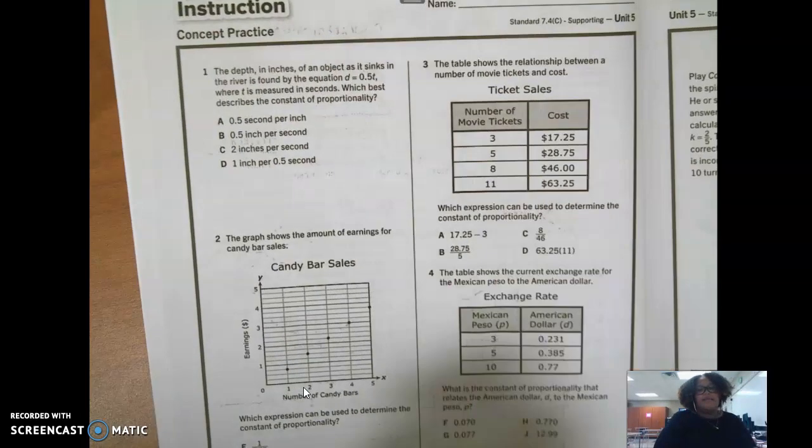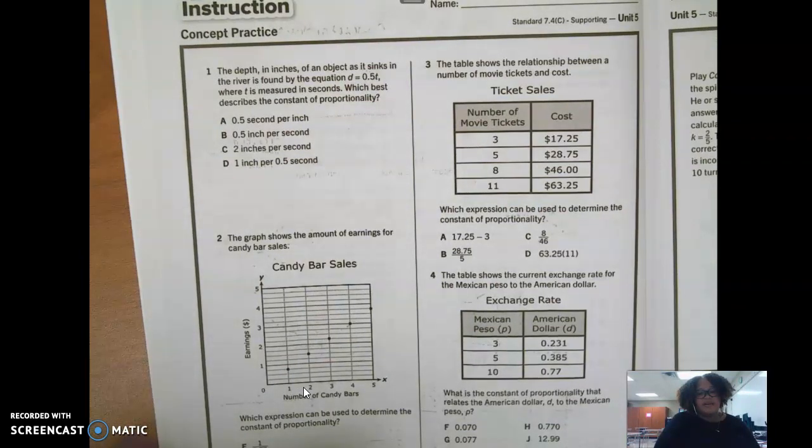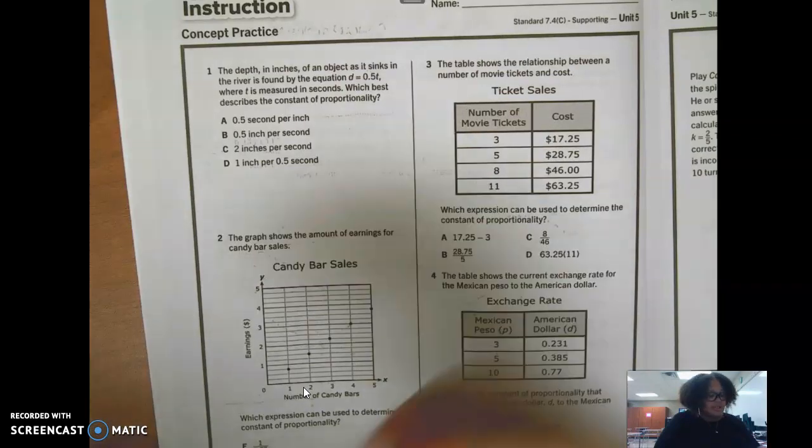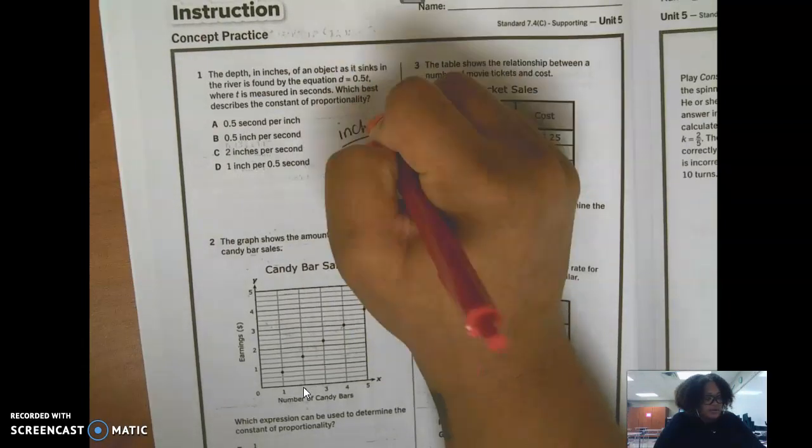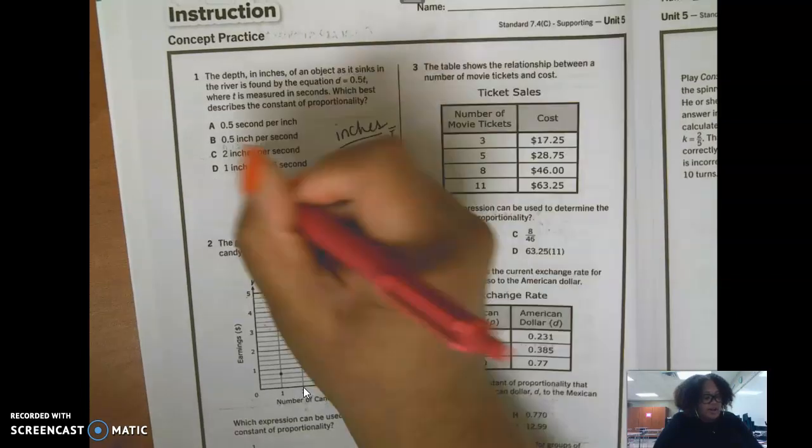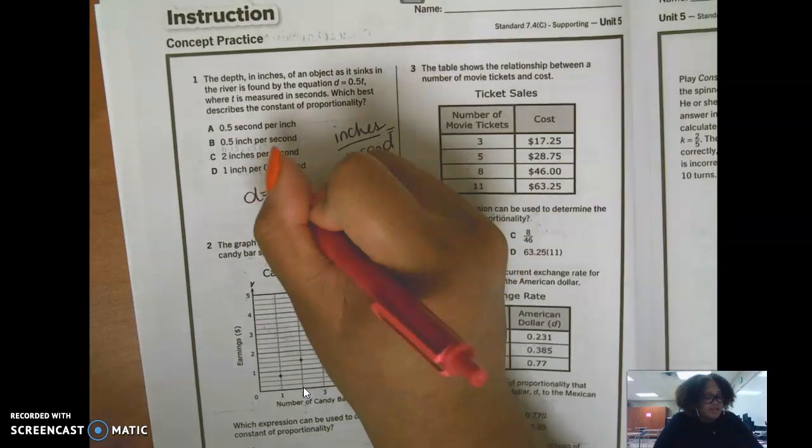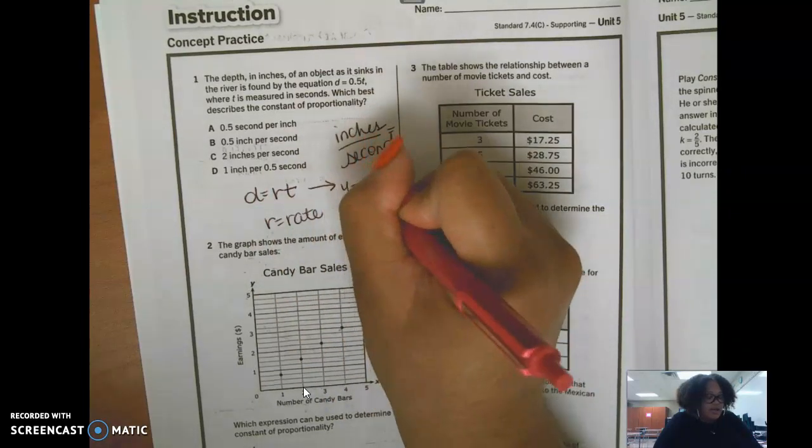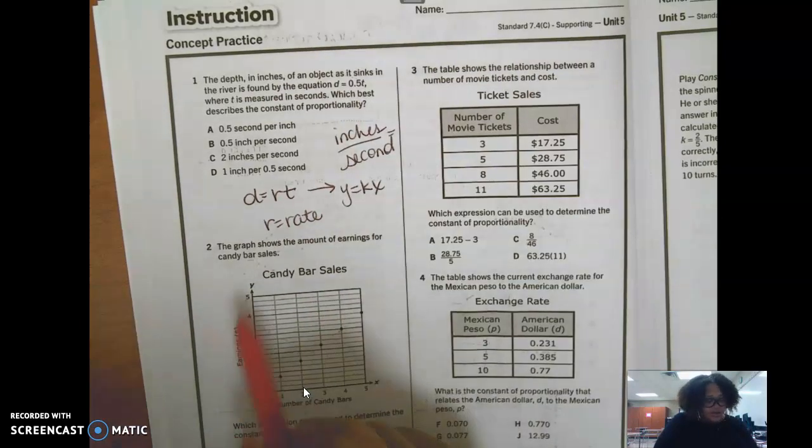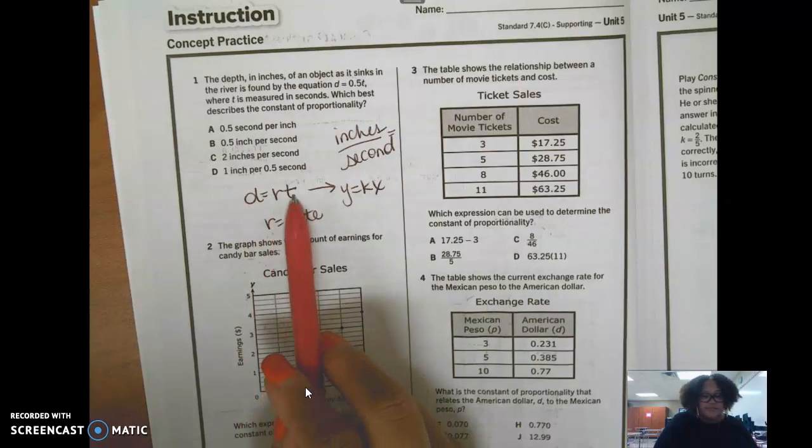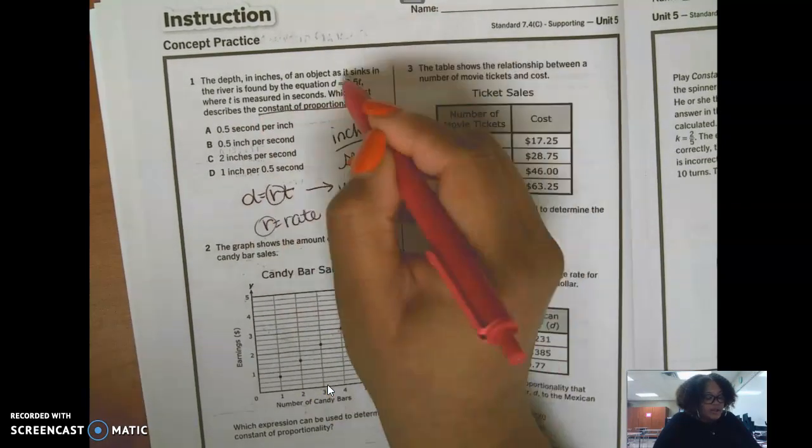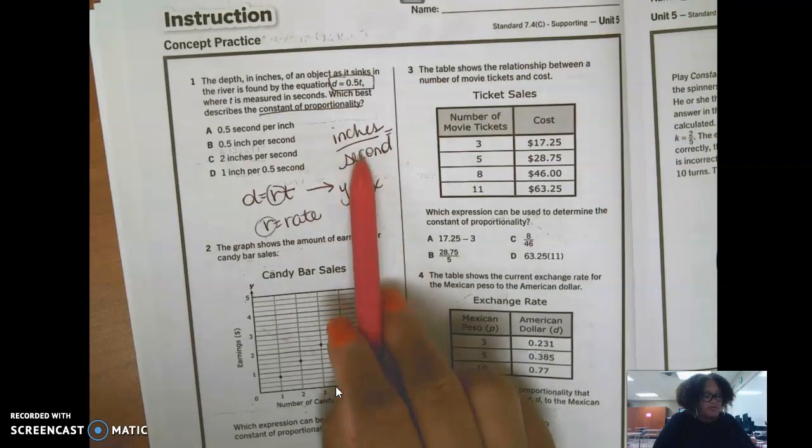Alright. The depth in inches of an object as it sinks in the river is found by the equation d equals half of t, where t is measured in seconds. Which best describes the constant of proportionality? So this is going to be inches per second. Inches per second. And the rate is already given to you. I talked about this last week. This is the dirt formula, where r is the rate. And this is directly related to y equals kx. Okay? They're just using different letters. D is for distance, r is for rate, t is for time. So this value right here is your rate or your constant of proportionality. And they give it to you off-risk. There's the rate and words as well.